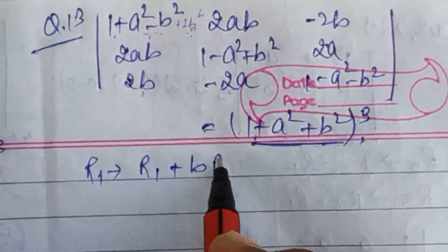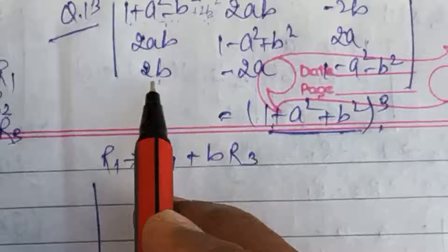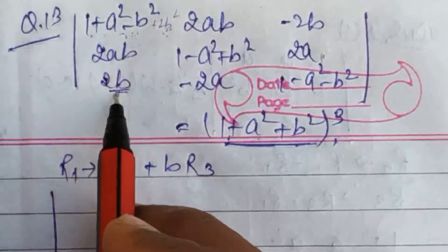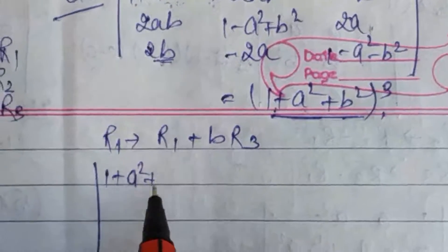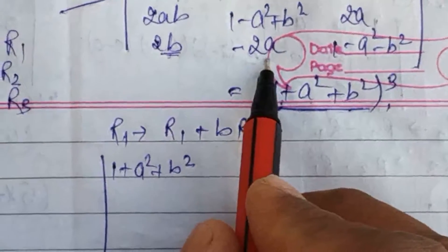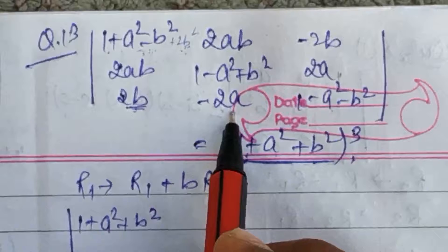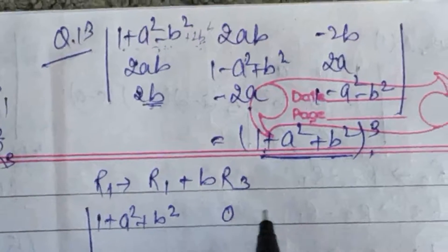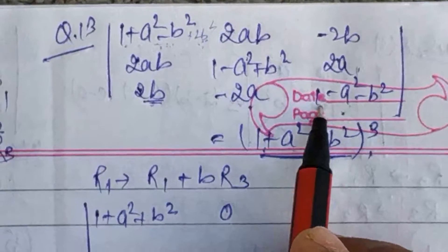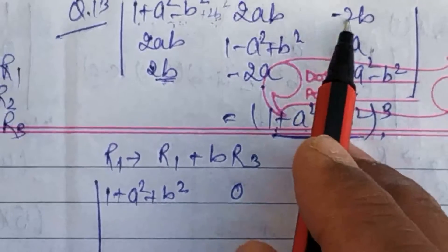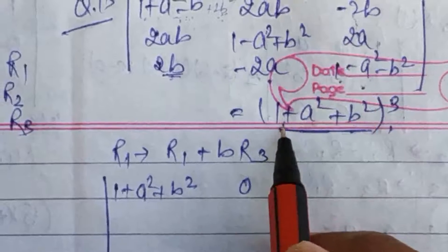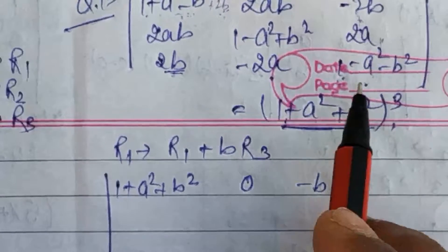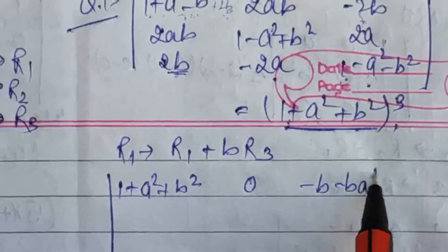R1 plus b·R3 operation लगाने पर: minus b square plus 2b square = plus b square, तो first element बनता है 1 plus a square plus b square। यहाँ b से multiply करने पर minus 2a आया और इसे add करने पर 0 आ गया। यहाँ b से multiply करने पर minus b मिला, और minus 2b plus (-b) = minus 2b plus b = minus b, तो minus b(1 plus a square plus b square)।